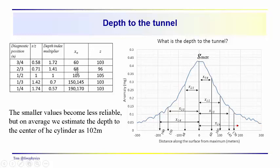We've got 60, 68, 105, 150 or 145, 190 or 170 for the values of X_n at these different diagnostic positions where the anomaly falls off to three-quarters, two-thirds, one-half, one-third, one-quarter. Multiplying through by the depth index multiplier, 60 times 1.72 gives us 103, 68 times 1.41 gives us 96, and so on. We take the average, and we find that the cylinder is located approximately 102 meters, or the tunnel is located approximately 102 meters beneath the surface.